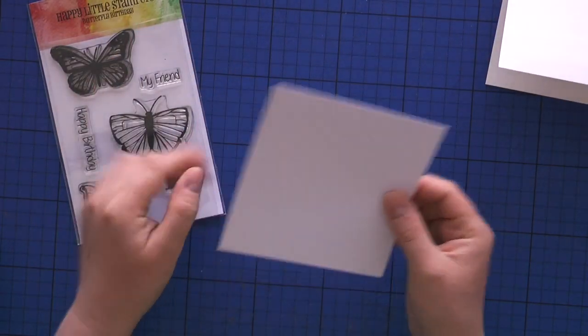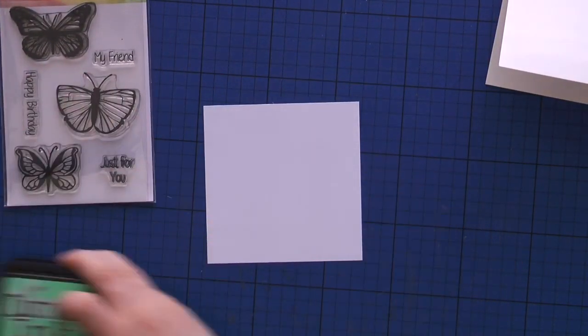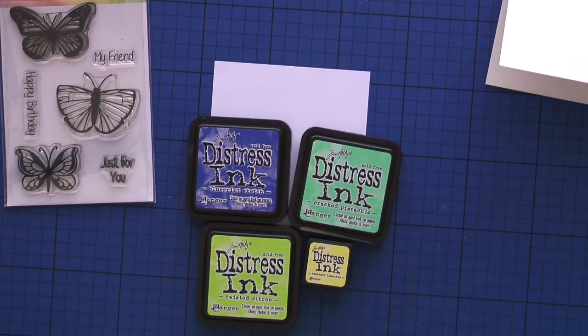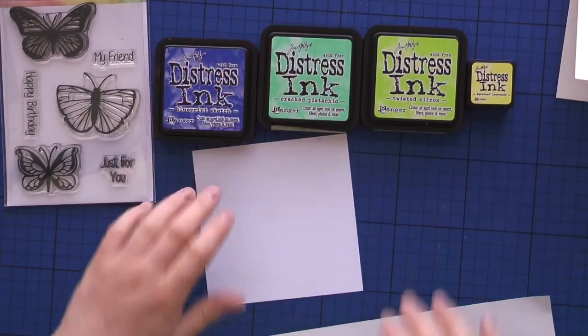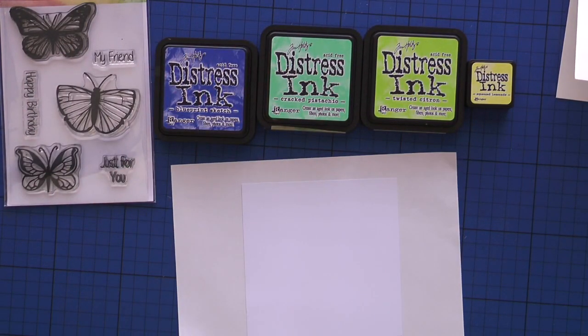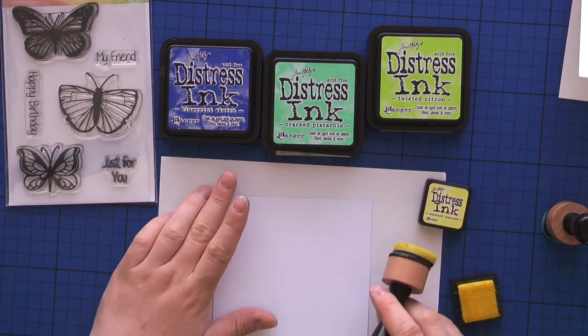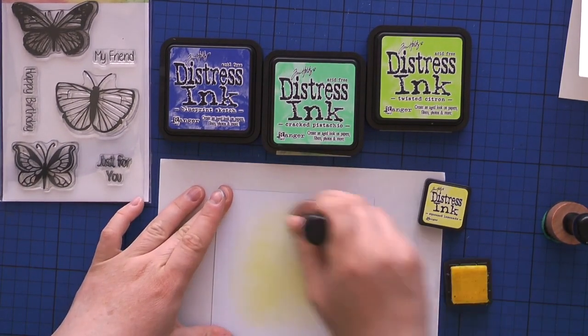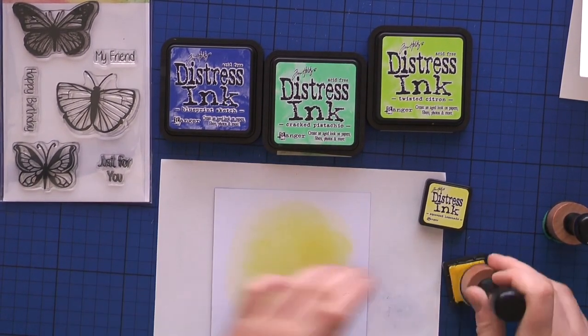The stamp set is by Happy Little Stampers. First, I'm going to blend some inks. I'm going to use distress inks - just three of those, excluding the blueprint sketch - and I'm going to blend the inks on top of Neenah solar white cardstock.